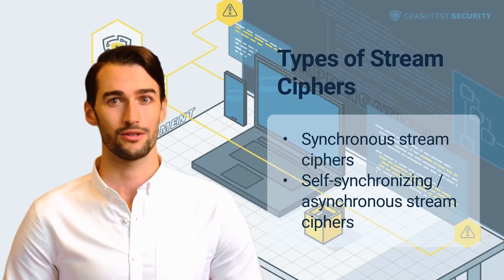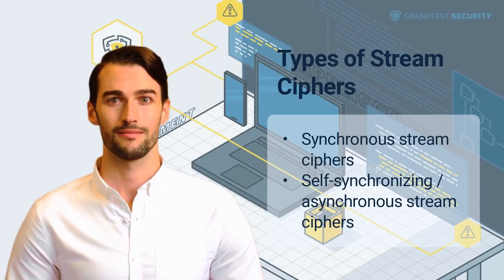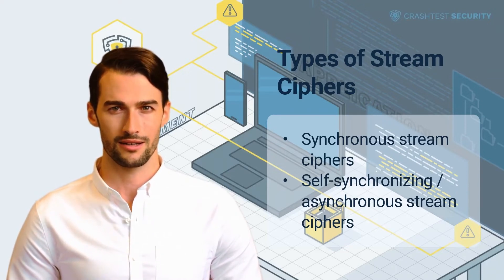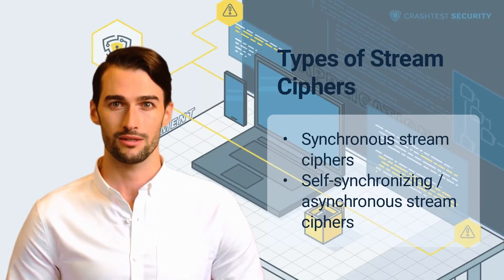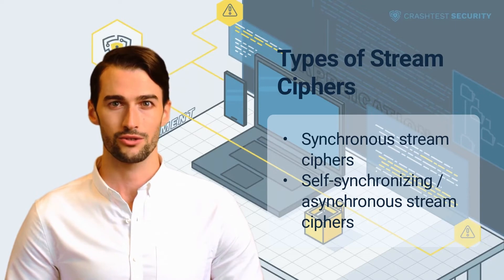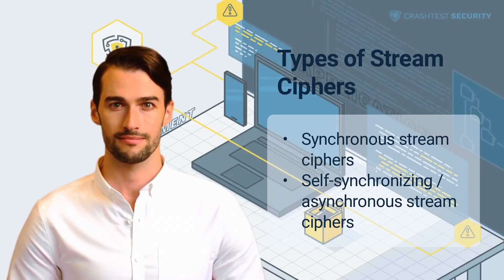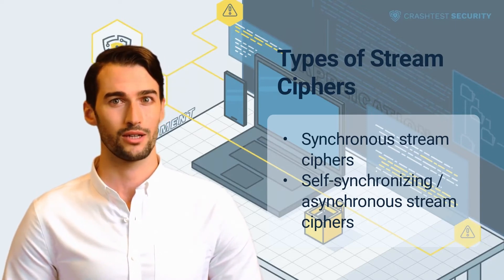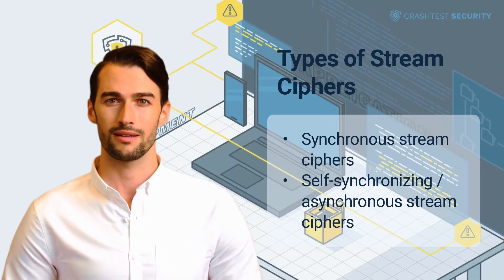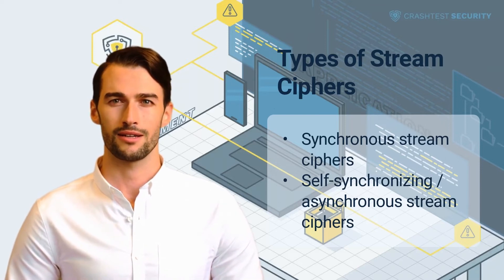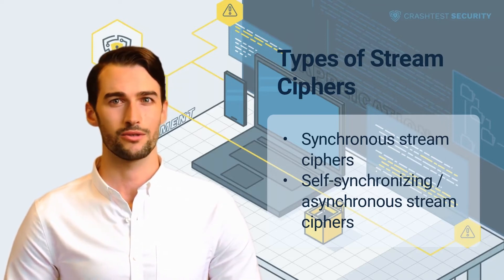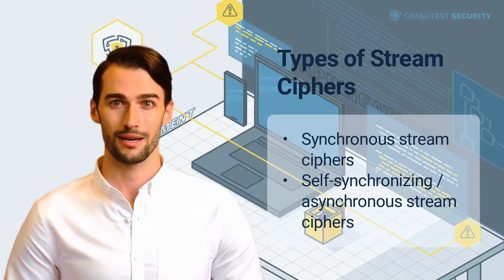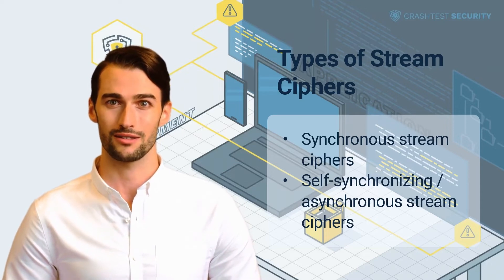In the synchronous stream cipher, the keystream block is generated independently of the previous ciphertext and plaintext messages. The most common stream cipher modes use pseudorandom number generators to create a string of bits and combine it with the key to form the keystream, which is XORed with the plaintext to generate the ciphertext.